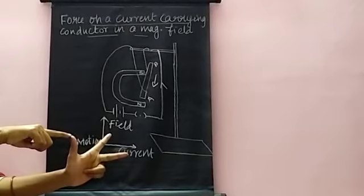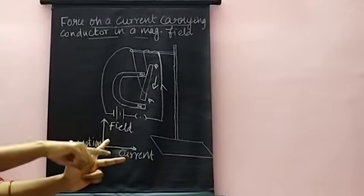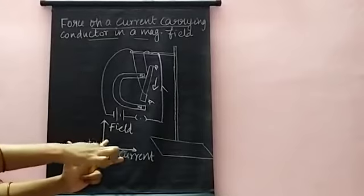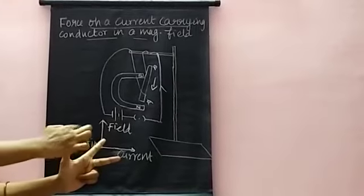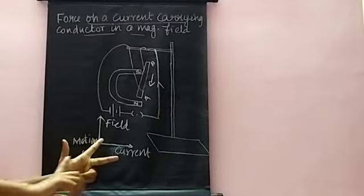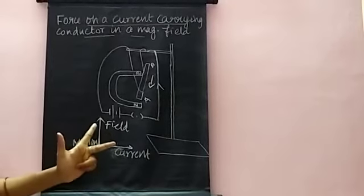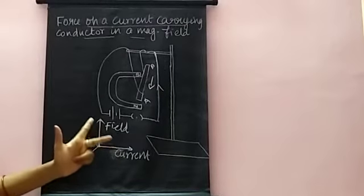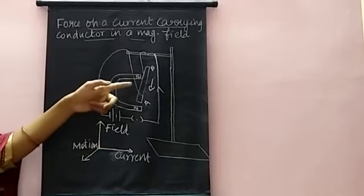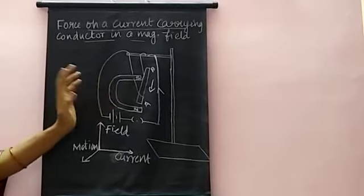The magnetic field, the motion, and the current — these three are mutually perpendicular. This is Fleming's Left Hand Rule. With the use of this rule, we can find out the direction of the magnetic force.